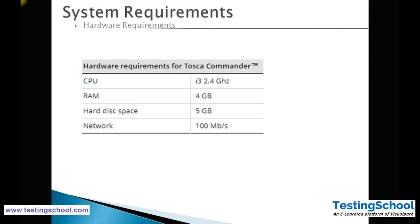Now we will try to install Tosca on our system. For installing Tosca, the hardware requirements are: a CPU with processor i3 or 2.4 GHz or more, RAM minimum 4 GB, hard disk space of 5 GB, and network speed of around 100 Mbps.